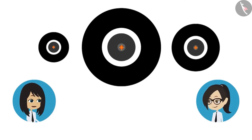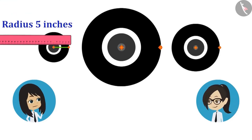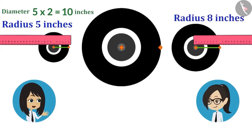Now measure the distance from the center to the point on the boundary. Now look, the radius of the wheel of the scooter is 5 inches. This means its diameter will be 5 inches multiplied by 2 meaning 10 inches. Now look, the radius of the front wheel of the tractor is 8 inches. This means its diameter is 16 inches.